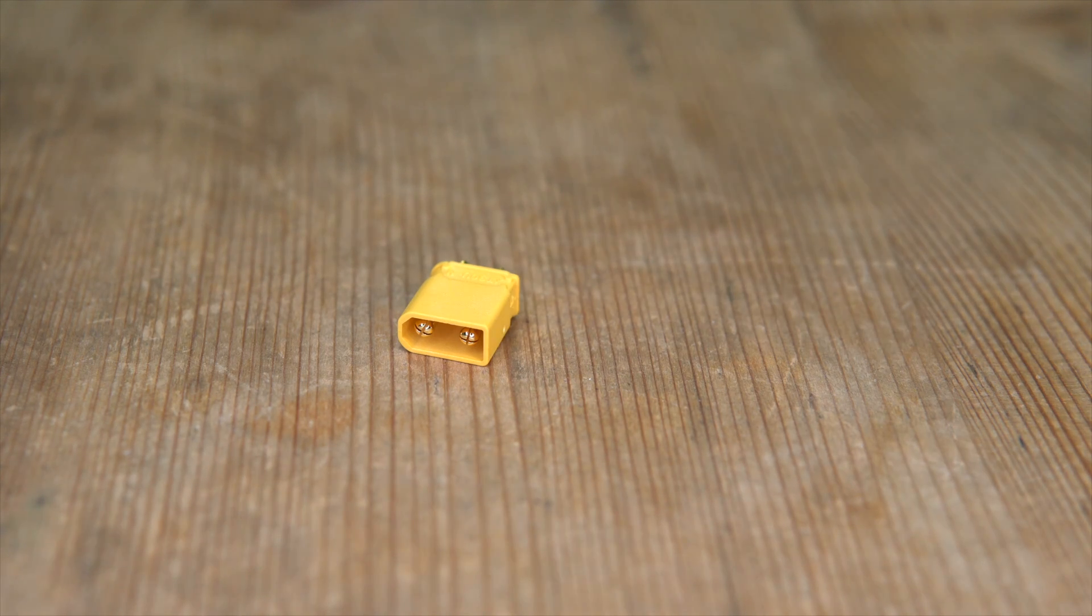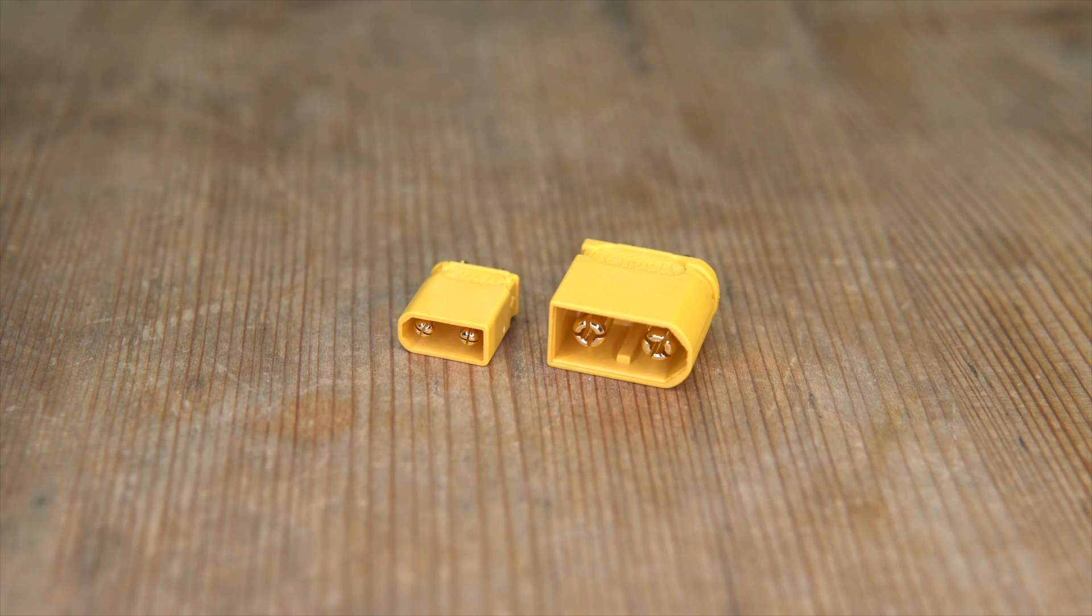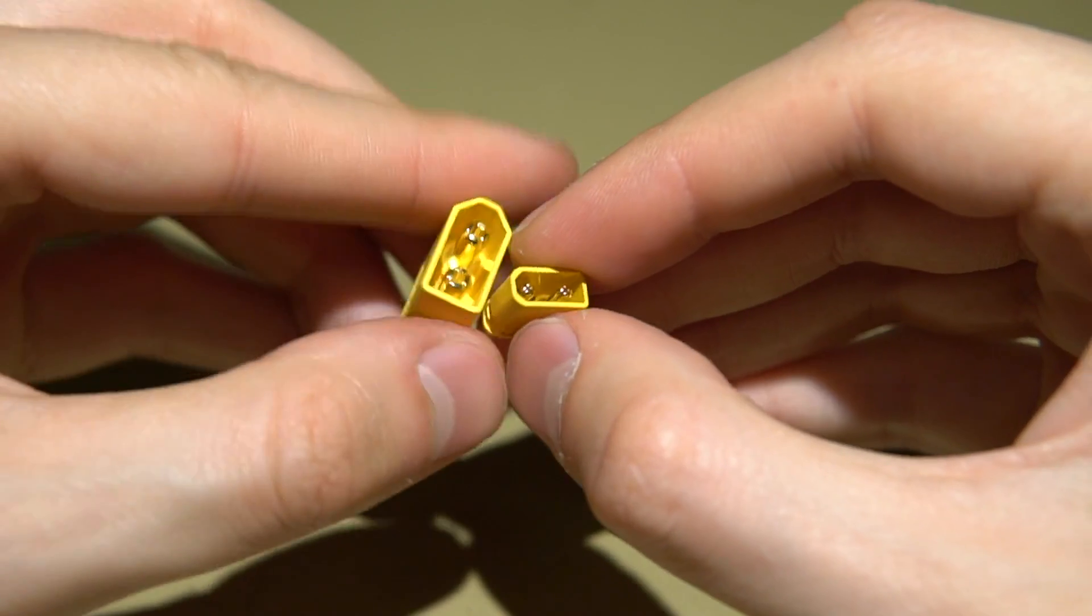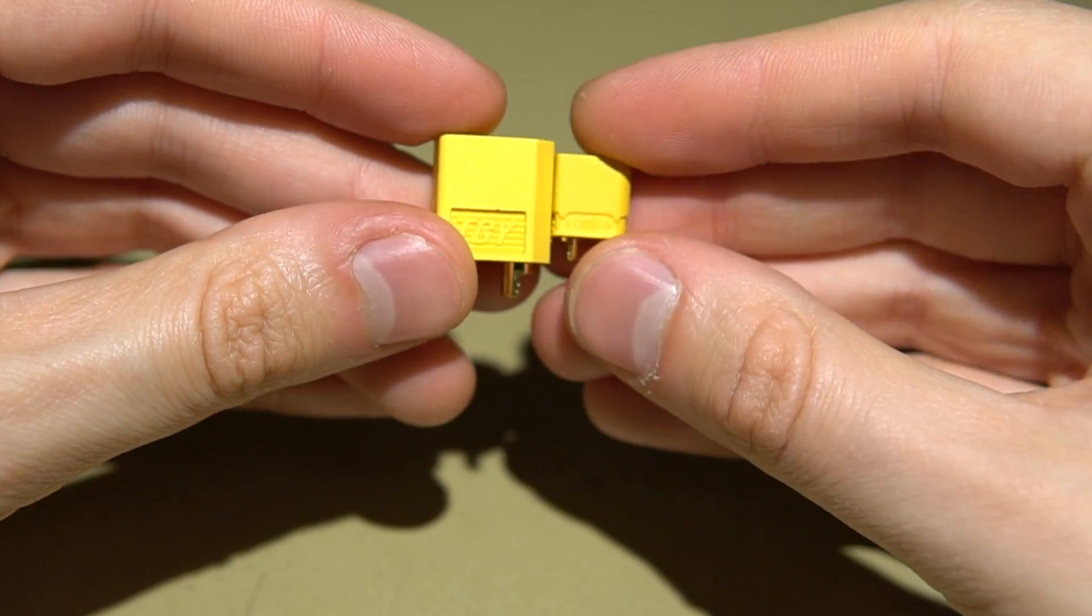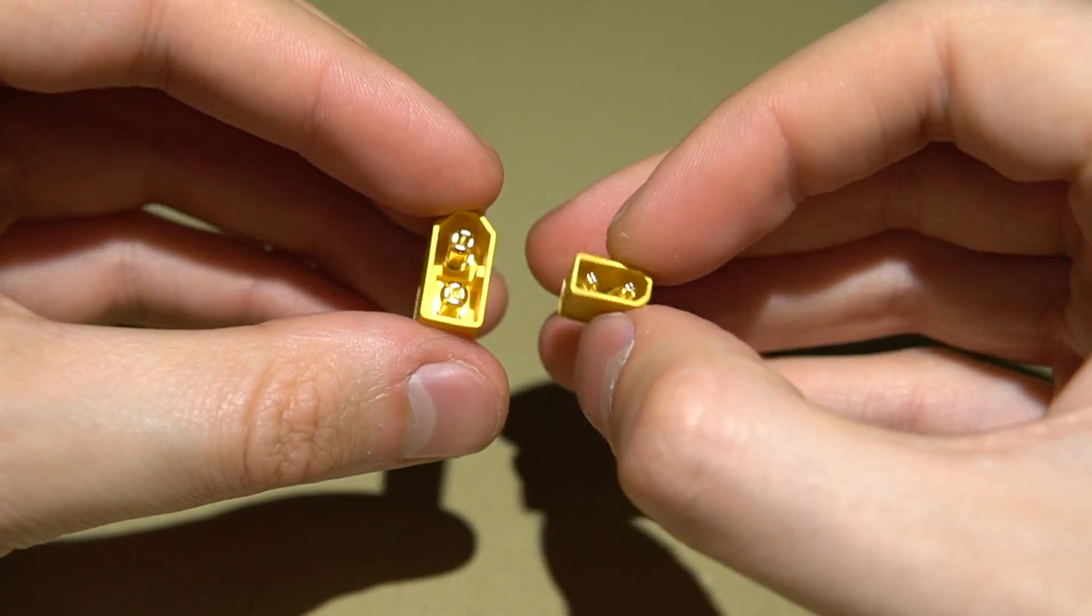The XT30 is the smaller brother of the popular XT60 connector. Once you get one in your hand, you notice how tiny this plug really is. In fact, it's comparable in size to a JST that you find on toy drones.